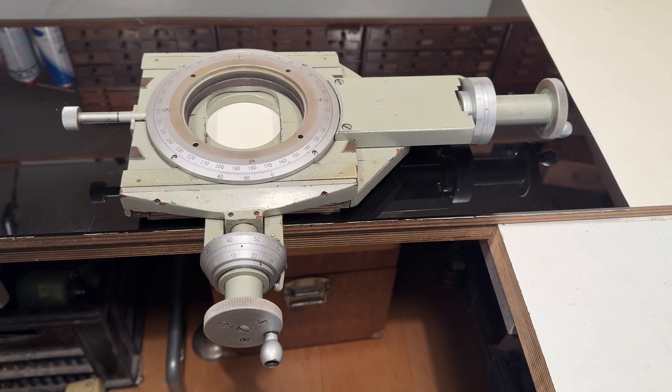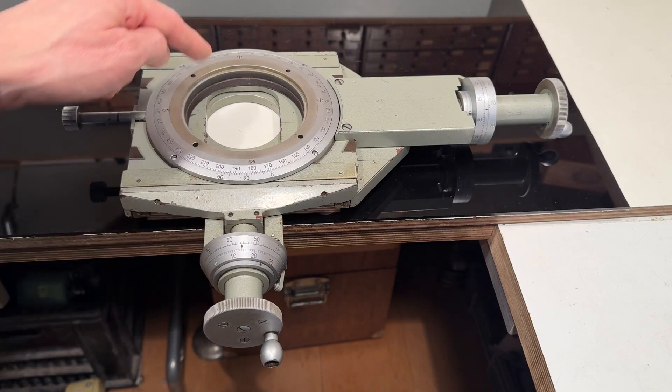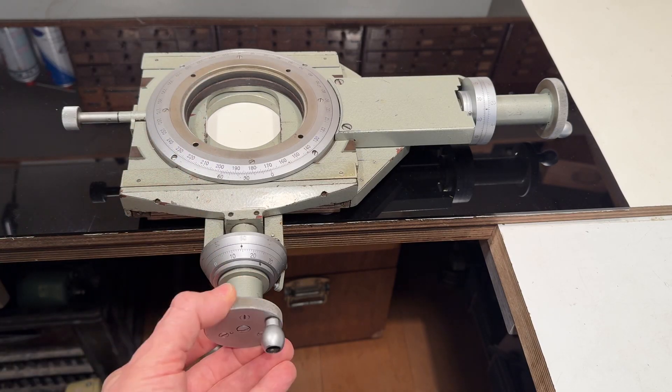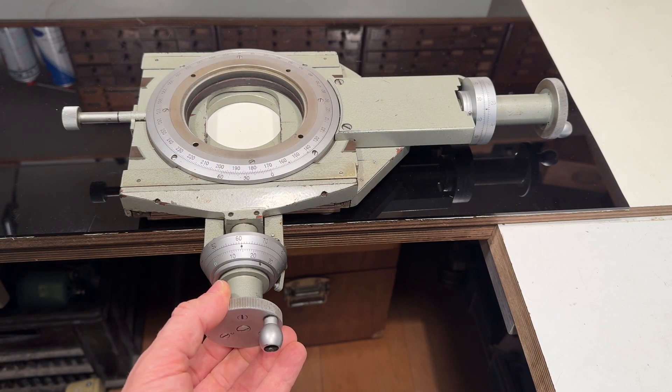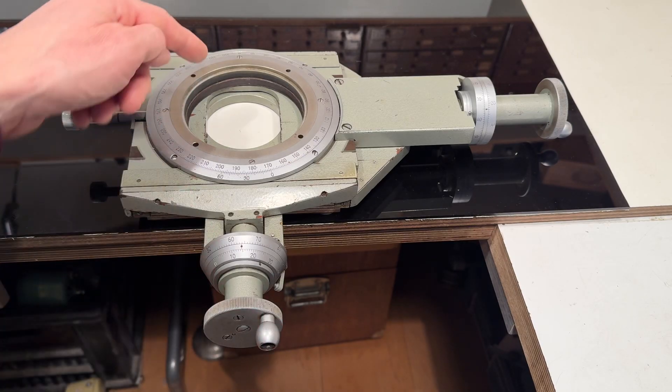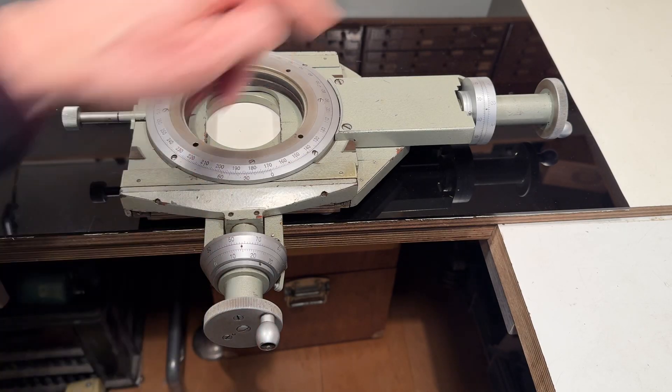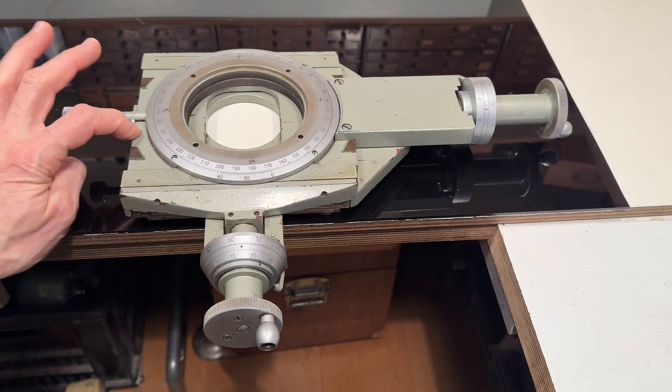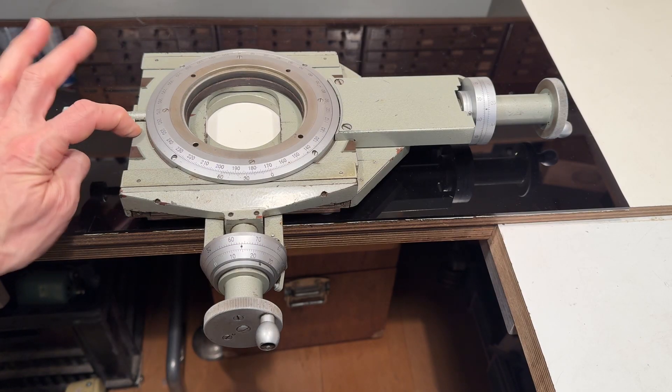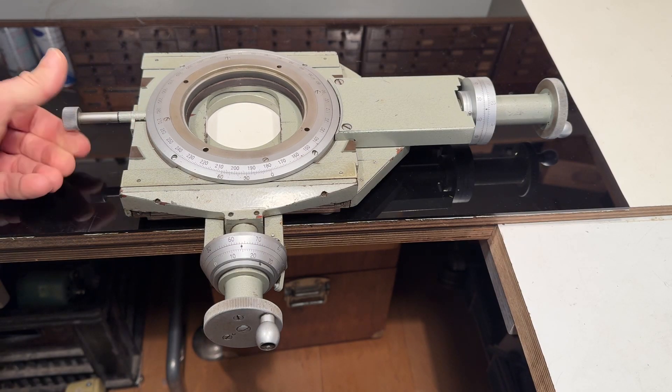I have here a very interesting toolmaker's microscope cross slide or stage. In this direction it has a travel of 50 millimeters, and in this direction it has a travel of 75 millimeters, and there's a round table included.